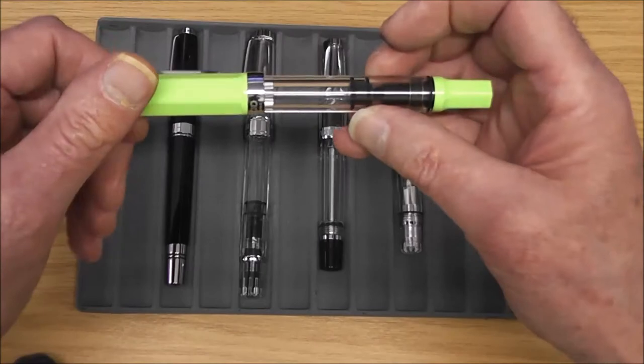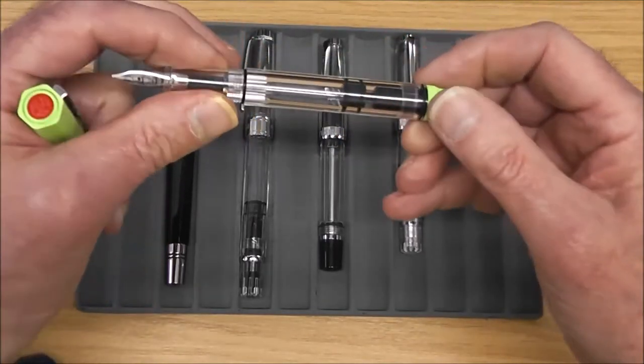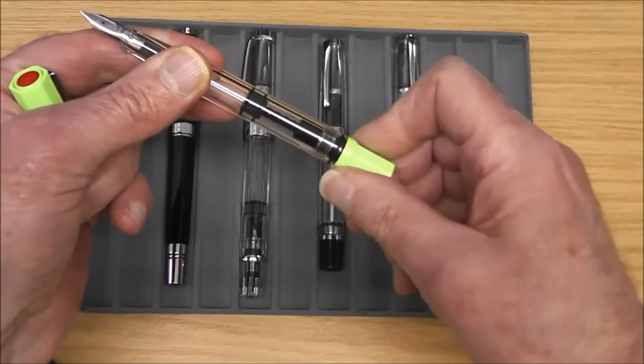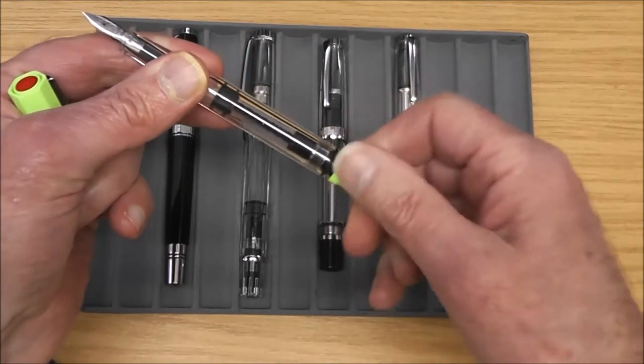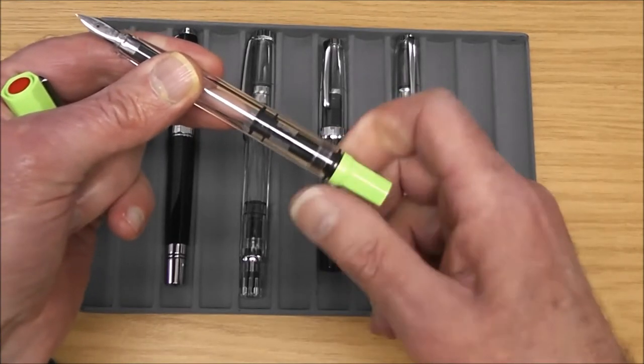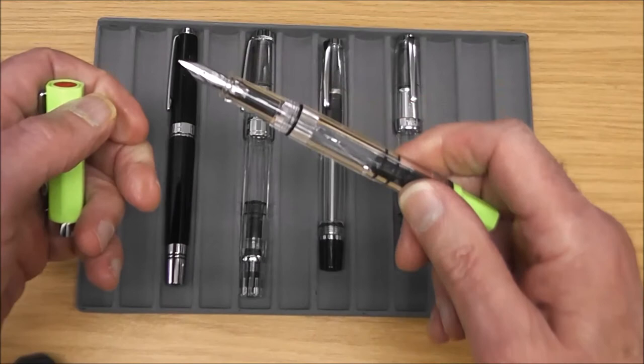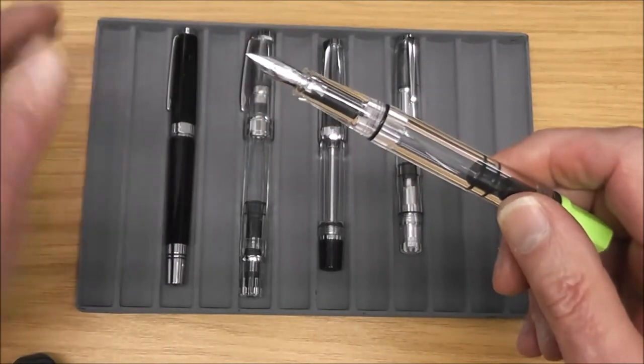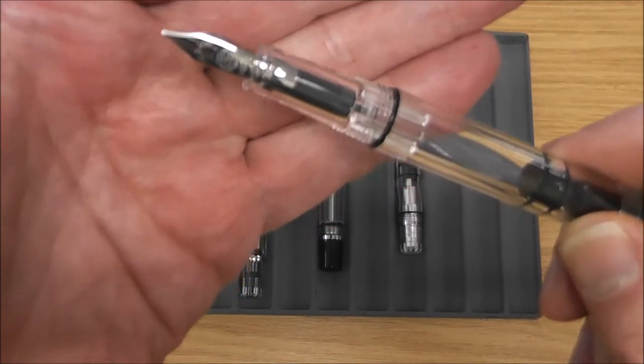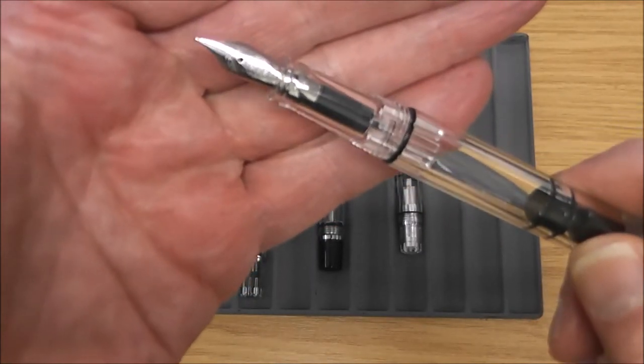Okay, so firstly what we have here is the Echo. What we see immediately is it is a piston filler, beloved of many serious pen fans. There's the piston going up and down. As you can see, the ink capacity is going to be pretty massive. You can see a very nice nib here.